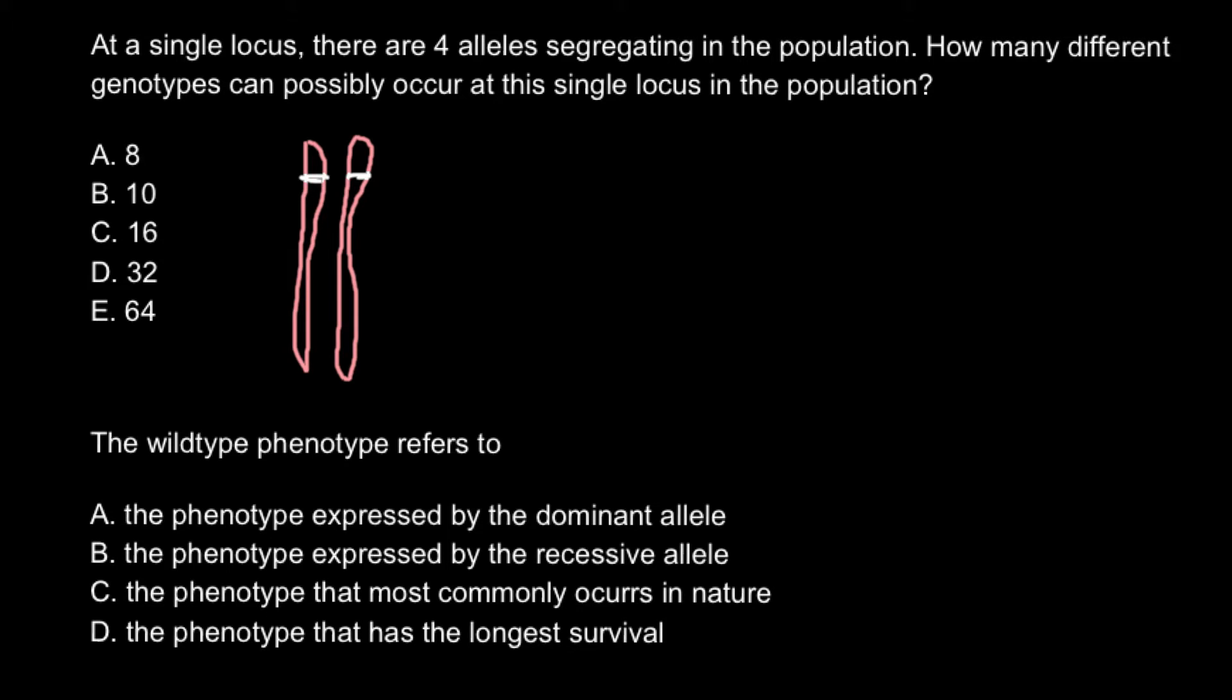For example, this can be allele A, B, C, and D. And of course these alleles can happen here in different combinations. For example, on this chromosome, this can be the maternal chromosome and this can be the paternal chromosome. So here at this locus we can find allele A, and on the other chromosome we may find allele B.